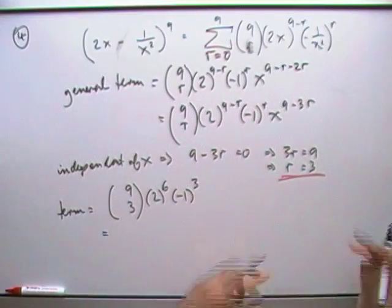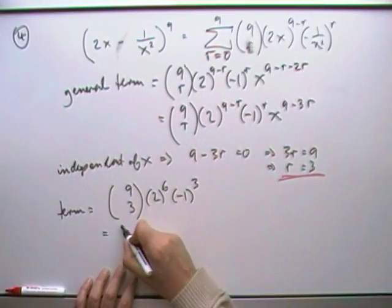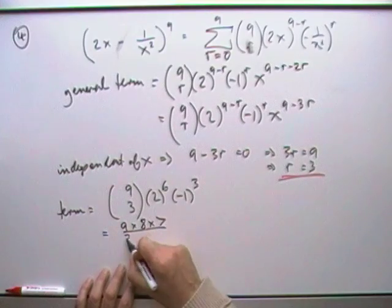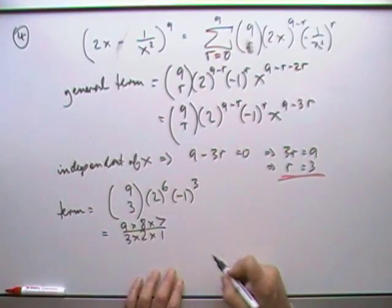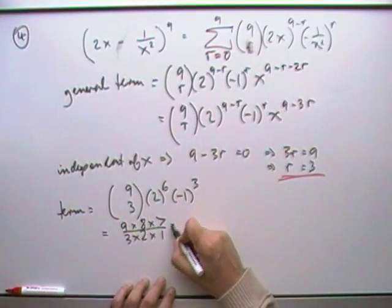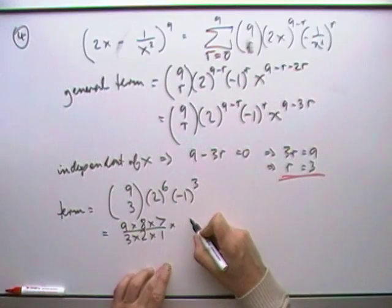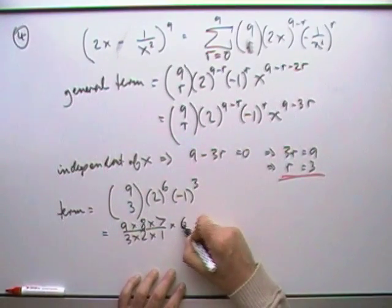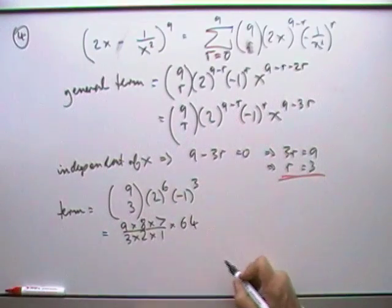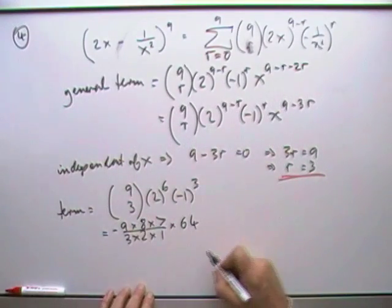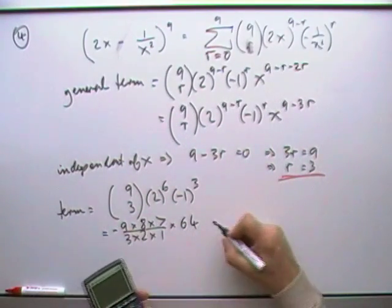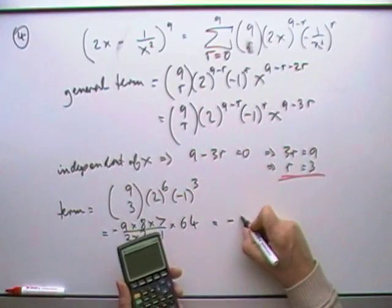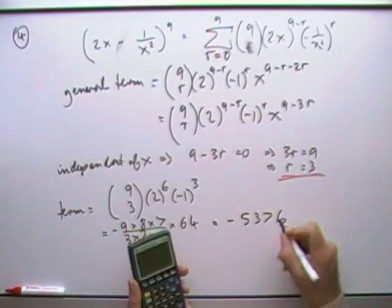Then you could just put that into your calculator, or you could say well what is that. You've got 9 times 8 times 7 over 3 times 2 times another one. I've then got times 2 to the power 6, that's 64, and then a negative cubed is negative. And then it's a case of in the calculator, so that would be negative 5376.